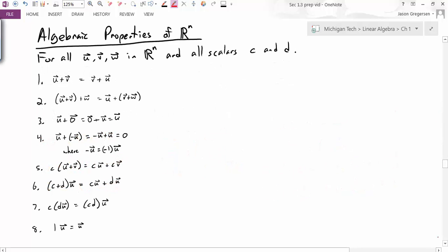And now we're going to introduce those exact properties. So these are the algebraic properties of R^n. This tells us that for any vectors u, v, w in R^n, and all scalars c and d, the following properties are true.